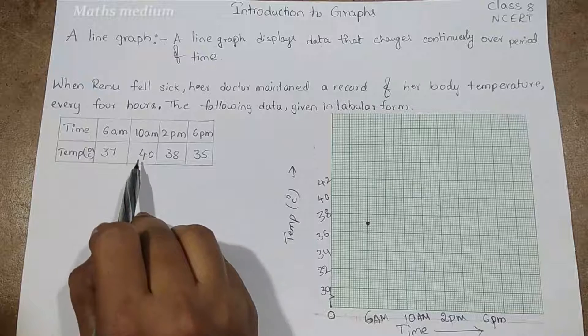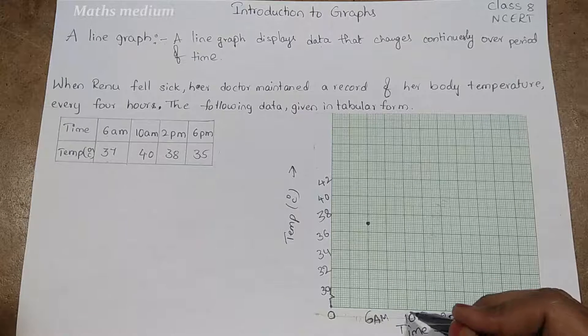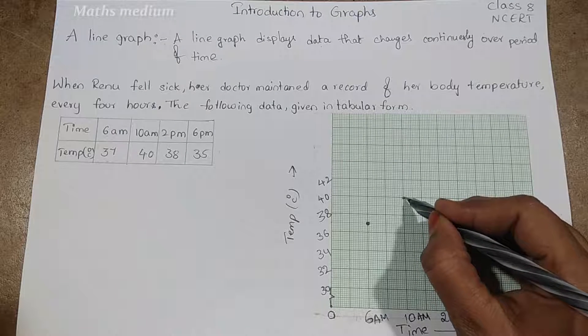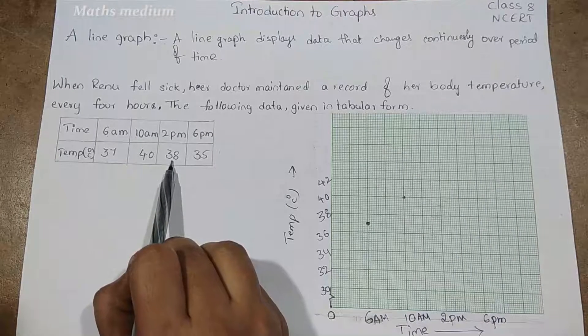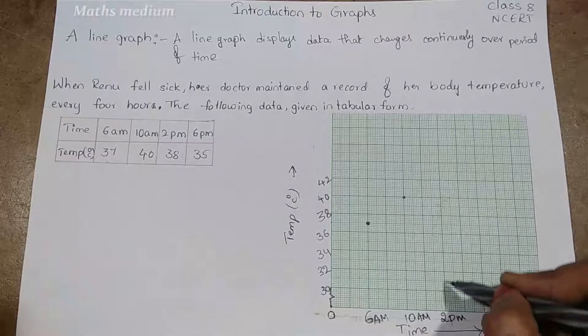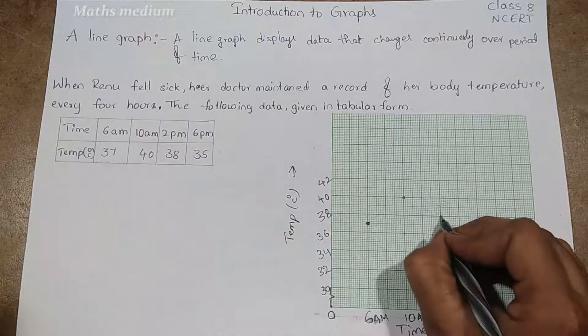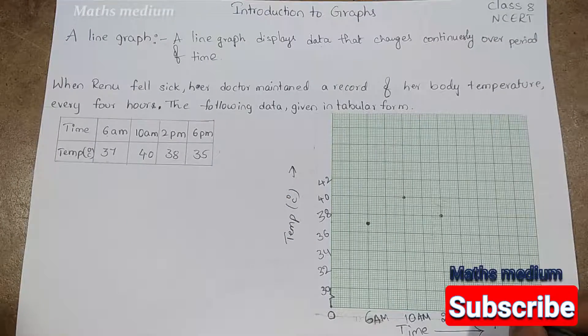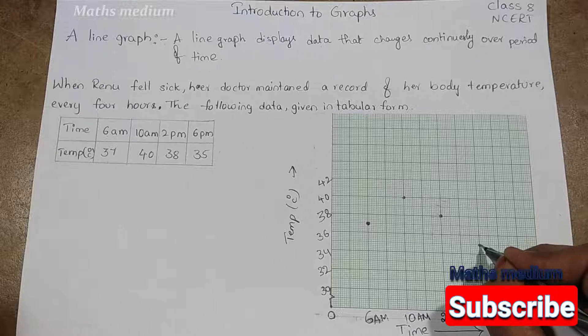Next, at 10 am we got 40 degrees Celsius. Take the 10 am line and where is the 40? Here is the 40. Next, after that 2 pm with 38 degrees Celsius. So 2 pm with 38—see, this is 38. 6 pm with 35. So 6 pm, this is 34 and this is 35, 36. So this is the 35.